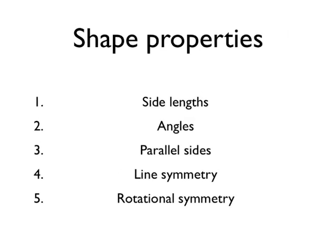To recap, shape properties allow us to describe shapes and the differences between shapes. For example, you can tell a kite from a rhombus because a kite has two pairs of sides with the same length, whereas a rhombus has all four sides the same length. Both shapes have four sides, but we can use shape properties to describe differences between shapes and to explain how we know a shape has a certain name.